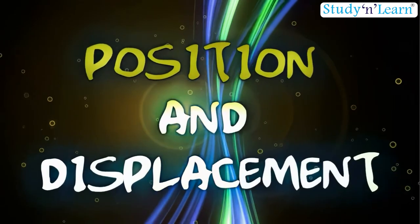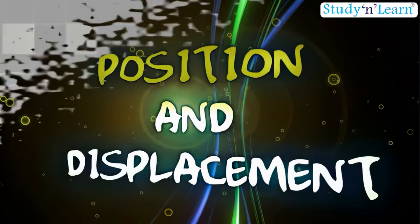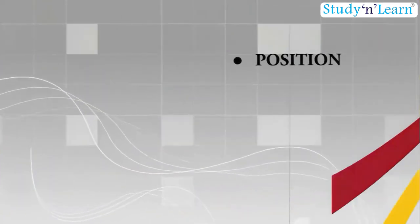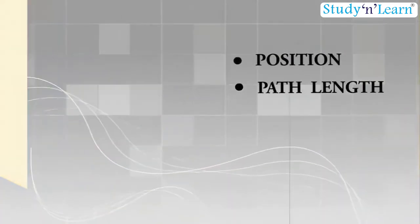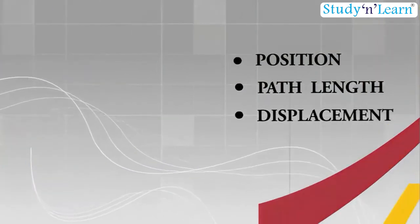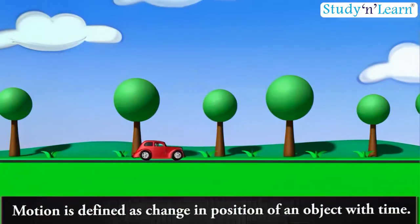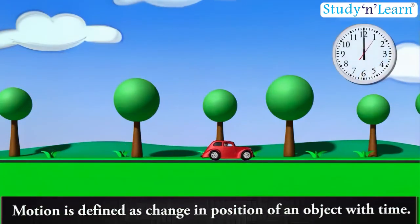Position and Displacement, Path Length and Displacement. Motion is defined as change in position of an object with time.